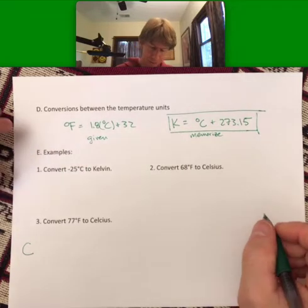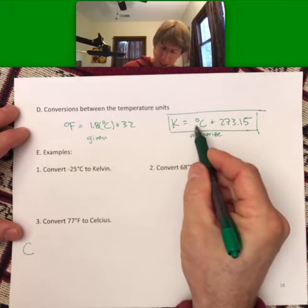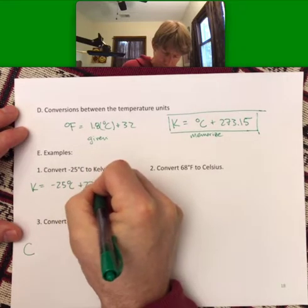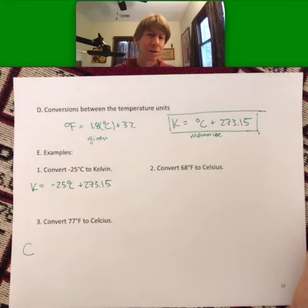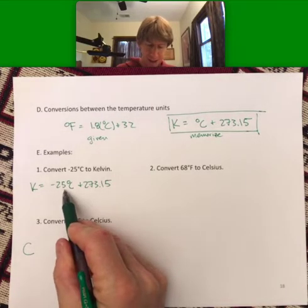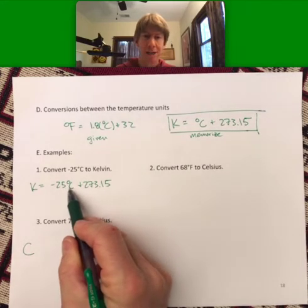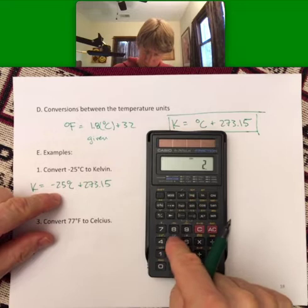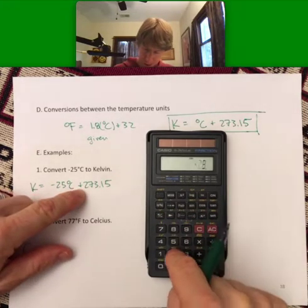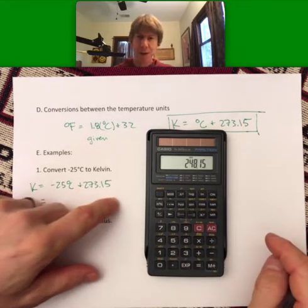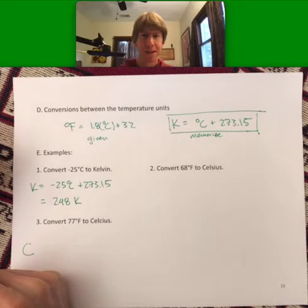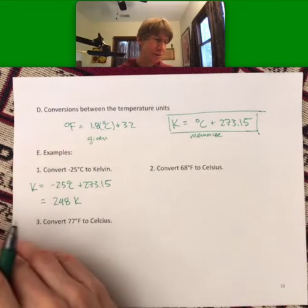Let's convert −25°C to Kelvin. K = −25 + 273.15. The 0.15 never makes a significant difference for this course — the sig figs here are just to the ones place, and there are no decimal places in −25 anyway. So the answer is 248 Kelvin. Three sig figs for lectures, exams, and homework are always fine.